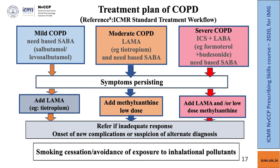This slide shows the COPD treatment plan as per the ICMR Standard Treatment Workflow. Whether mild, moderate, or severe, if symptoms persist, tiotropium should be added for mild COPD. For moderate COPD, consider adding low-dose methylxanthine. For severe COPD not getting adequate relief with ICS and LABA and need-based SABA, add a LAMA and/or low-dose methylxanthine. Refer the patient if there is inadequate response, onset of new complications, or suspicion of an alternate diagnosis.